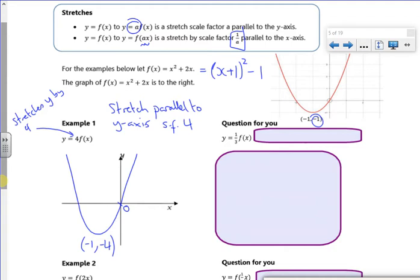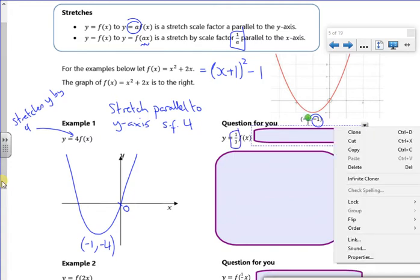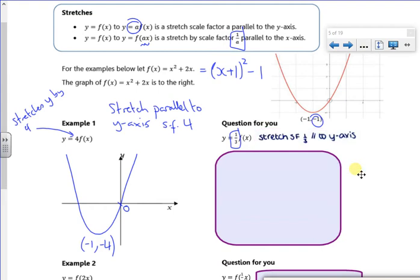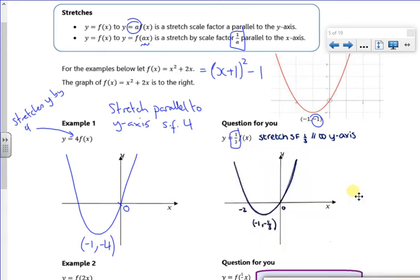What's this one then? So it's got a third. The other one for you is a third, isn't it? So stretch scale factor a third parallel to the y-axis. So instead of it being minus 1, minus 1, it's minus 1, minus a third. It doesn't change your x values, it changes your y values. That's important now.